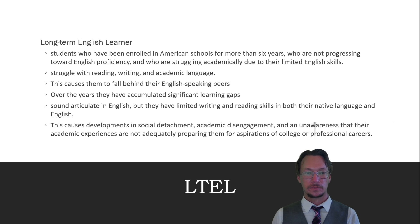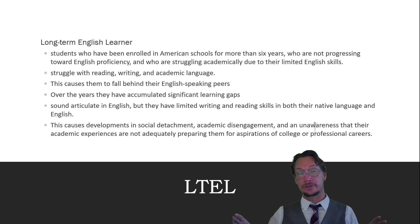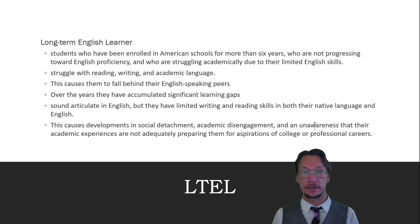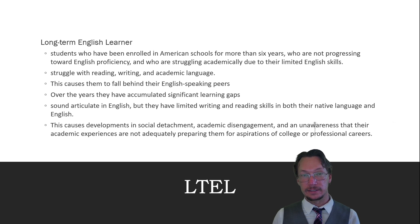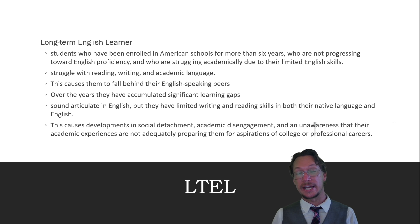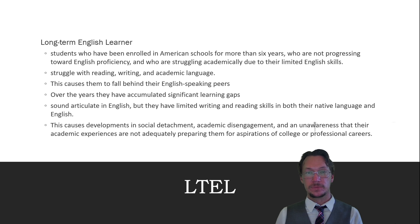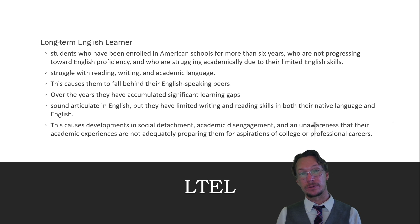How do you identify a long-term English learner? Most of them struggle with reading, writing, and academic language, which causes them to fall behind academically. Imagine this happening over a six-year period — there could be a significant gap between them and their peers. As a teacher in a classroom, it is difficult to point one out because most of them are articulate and speak English. It is their academics, writing skills, and reading skills that point to the true diagnosis. You will notice that in both English and their native language, they are not proficient, which can cause social detachment and academic disengagement.